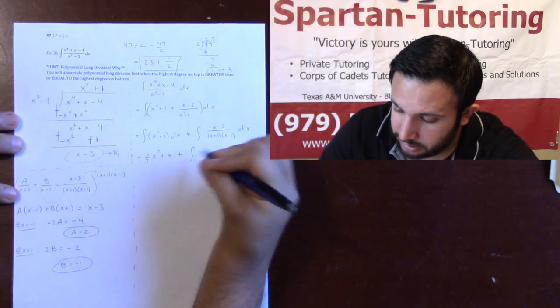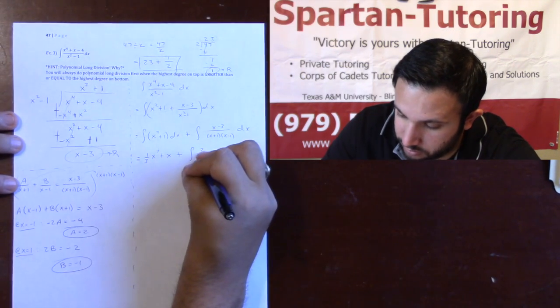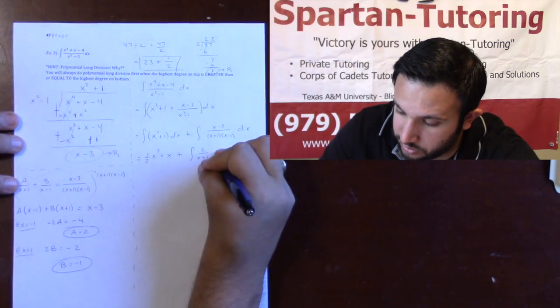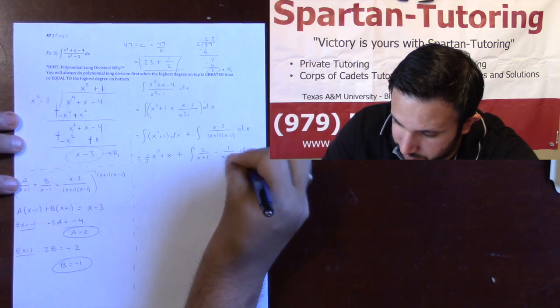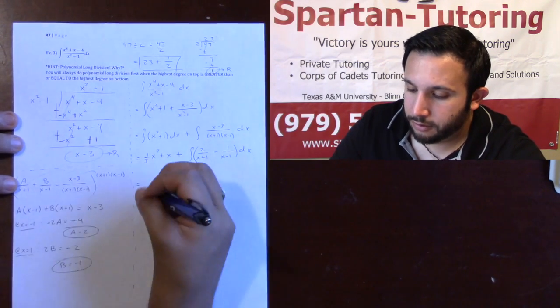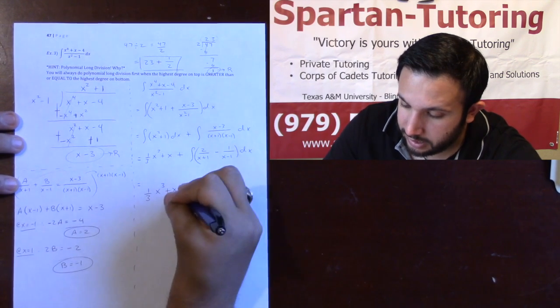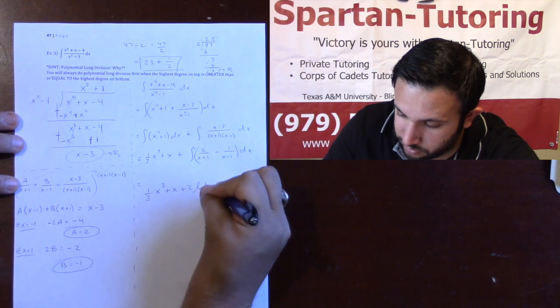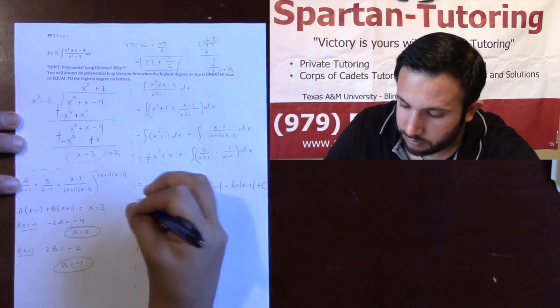And so, now that I have that, now I can do plus the integral of a over x plus 1, 2 over x plus 1, plus b over x minus 1. So that's going to be plus a negative 1 over x minus 1. And now we can finally integrate that. Therefore, our final answer is going to be 1 third x cubed plus x plus 2 times the natural log of x plus 1 minus the ln of x minus 1 plus c.